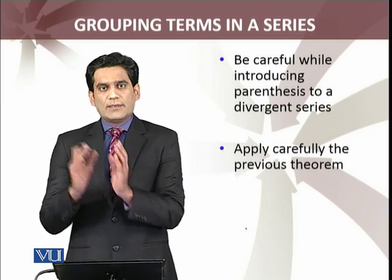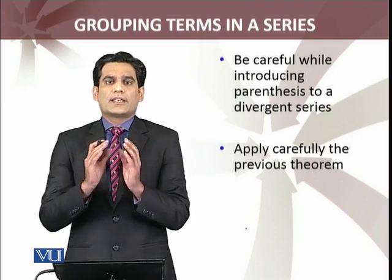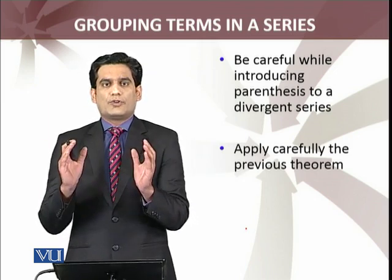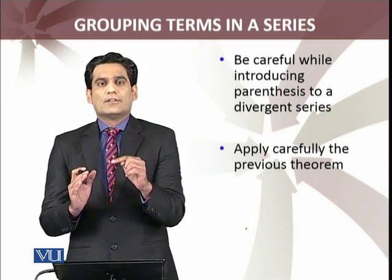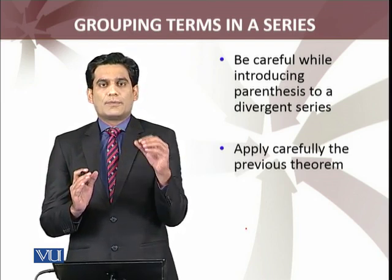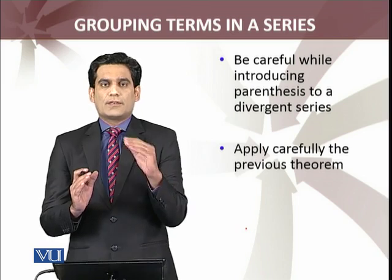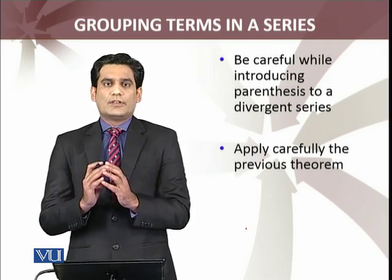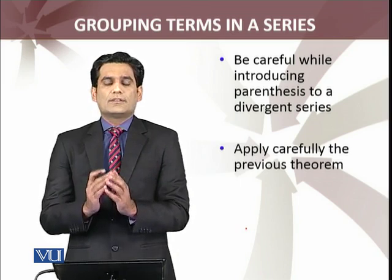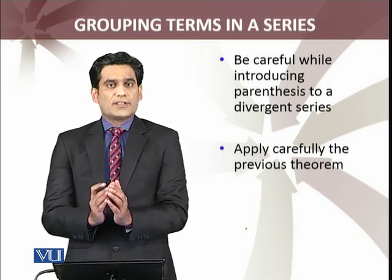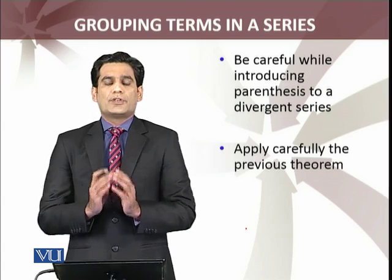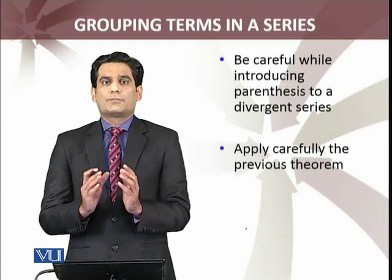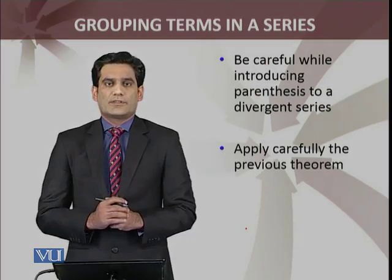But if you leave out one term and introduce parentheses pairing minus 1 and 1 differently, the sum of the series becomes 1. So at one time the series sum is 0 and at another time it is 1. This shows that for a divergent series, you have to be very careful while introducing parentheses or grouping.